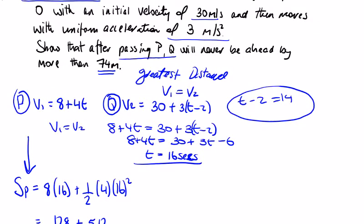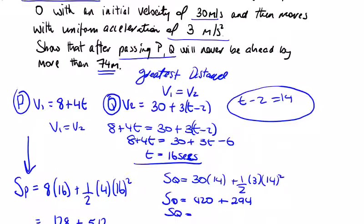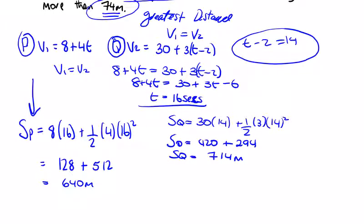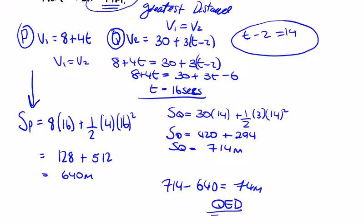So we find the distance for Q. The distance for Q is equal to UT, which is 30. T minus 2 is 14, plus one half A, which is 3 by 14 squared. 30 by 14 is 420, plus 14 squared is 196, divided by 2 is 98, times 3 is 294. So the distance for Q is 714 meters. And we were asked to show that the greatest distance is 74, which we can see here. 714 minus 640 is 74 meters, quod erat demonstrandum, that which must be demonstrated.